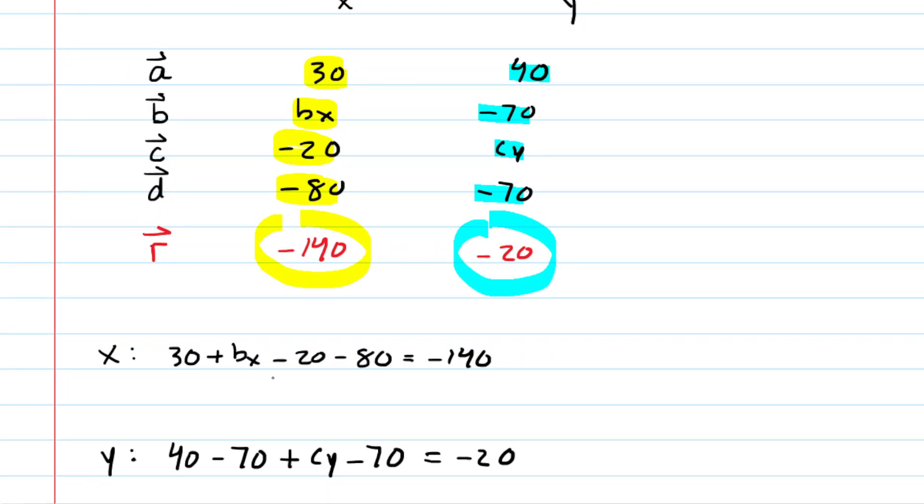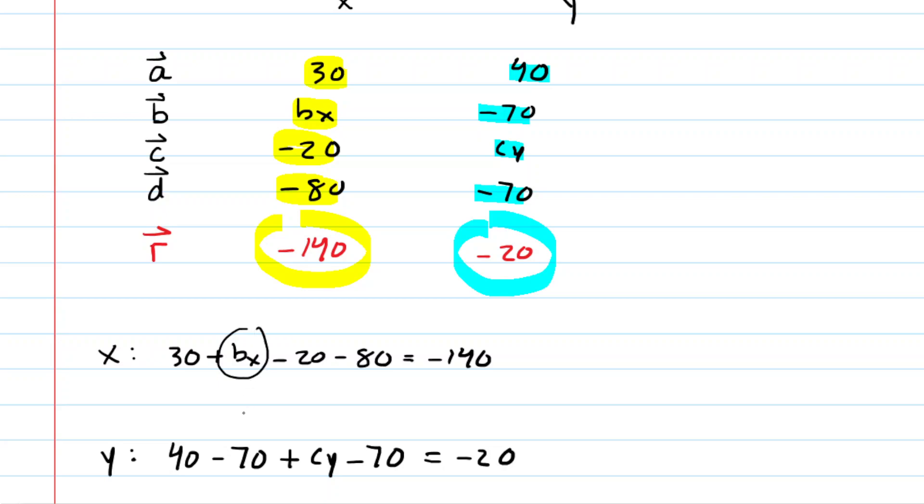There we have it, and now we can easily solve for B sub X using the first equation. We're just going to combine some like terms, so we'll add these terms together. We get negative 70 plus B sub X equals negative 140, and then to solve for B X, just add 70 to both sides. We can see that B sub X equals negative 70 centimeters. This is the correct answer to part A.